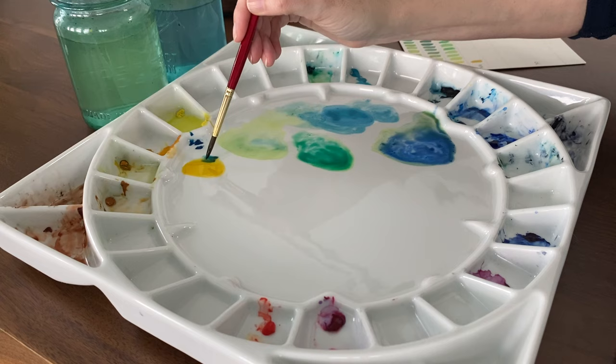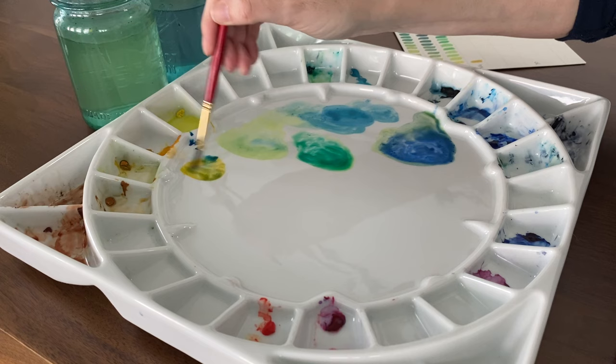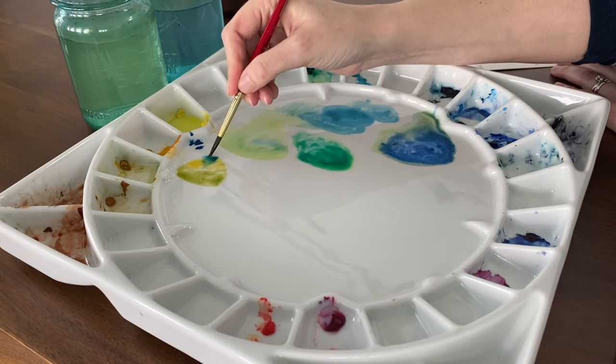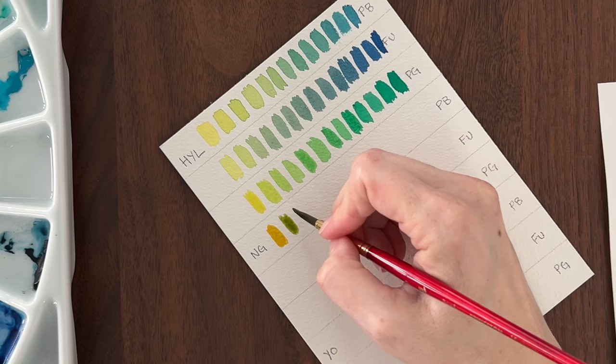To get a more natural green, instead of mixing cool blue with cool yellow, we can mix it with warm yellow. Because the warm yellow leans towards orange, which is the complementary color to blue, it will create a desaturated green.